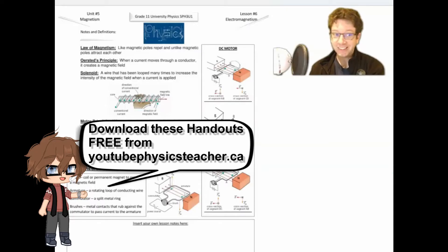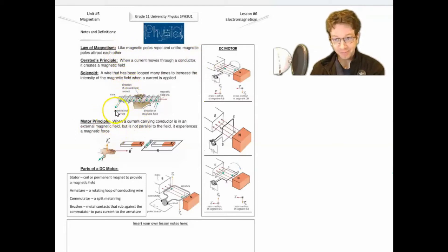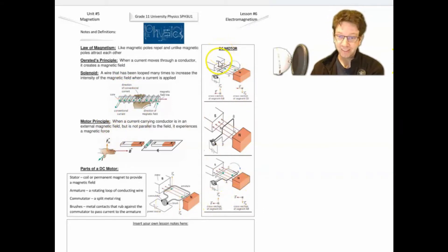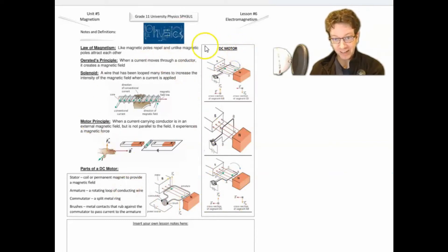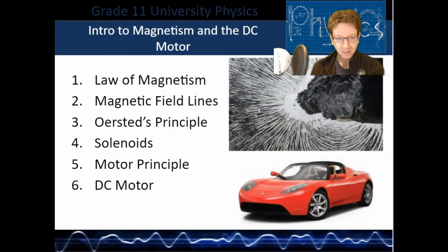Today is our first lesson on electromagnetism. There are quite a few things I'm going to teach you about — some basics about magnetism and electromagnetism like the motor principle, and I'm going to show you how a DC motor works. Remember, DC stands for direct current. There are no math problems today. All this information is on your handout, but I'm going to use my PowerPoint to go through it in steps. You can use your handout to follow along.